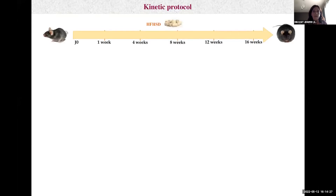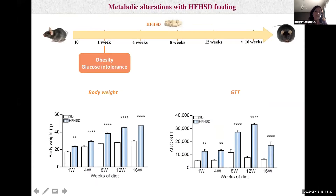In the second step, we investigated the causality of MAFLD by overexpressing specifically in the liver an organelle spacer or linker using an adenoviral strategy. Lastly, we investigated the relevance of our results in humans. The nutritional study used male mice fed either standard or high-fat, high-sucrose diet for 1, 4, 8, 12, and 16 weeks.